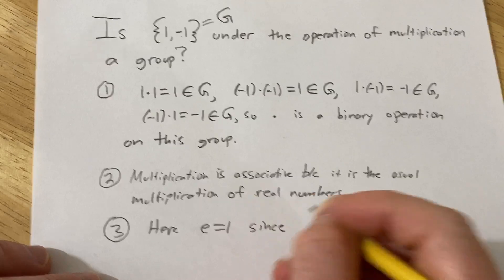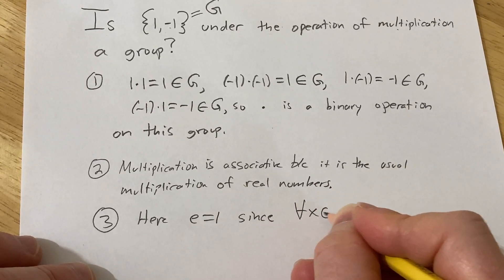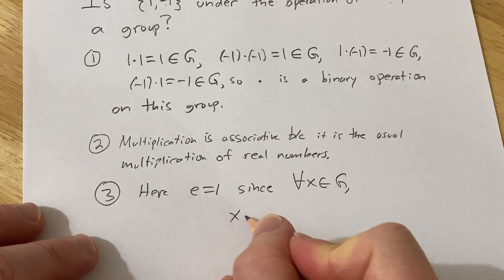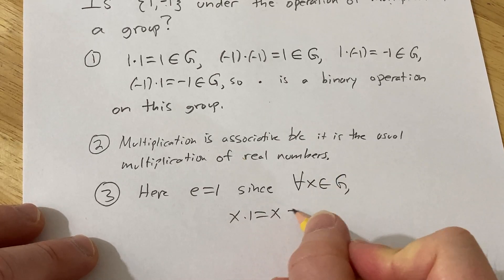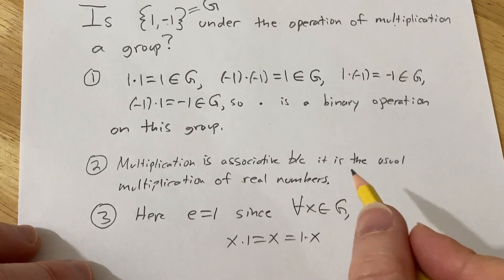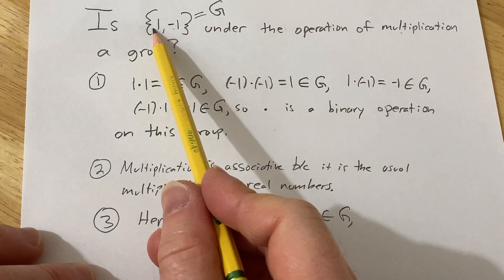since it's pretty easy to see for all x in g, we have x times 1 equals x, which is equal to 1 times x. And that's trivial, right? 1 times 1 is 1,